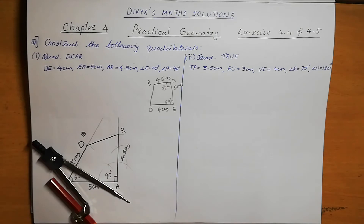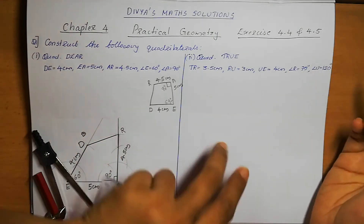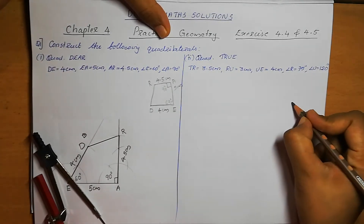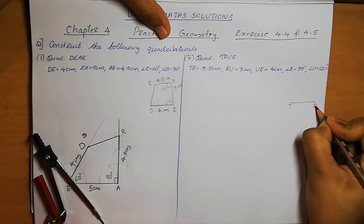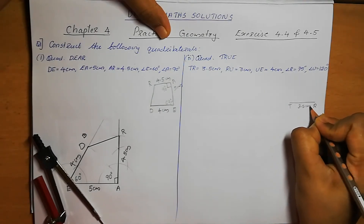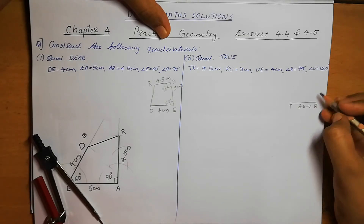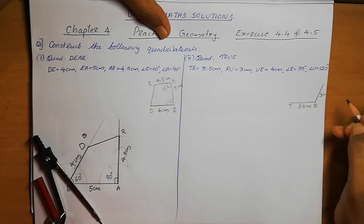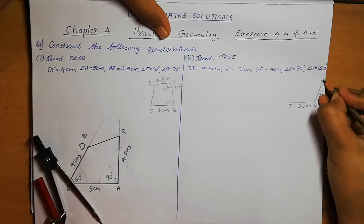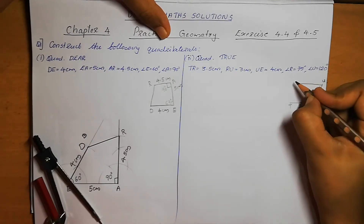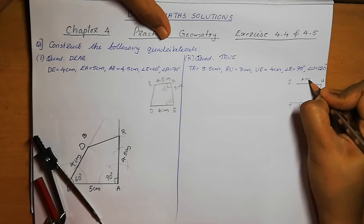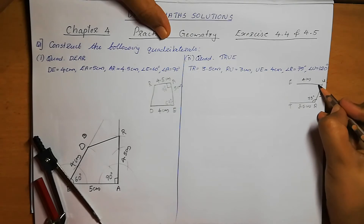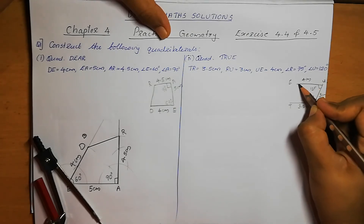Next, we need to draw quadrilateral TRUE. The measurements given are: TR is 3.5 cm, RU is 3 cm, UE is 4 cm, angle R is 75 degrees, and angle U is 120 degrees.